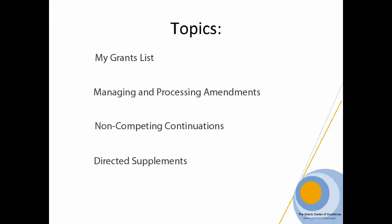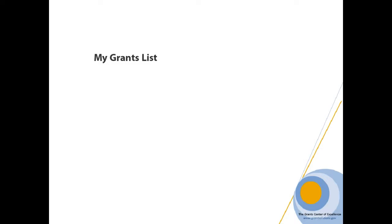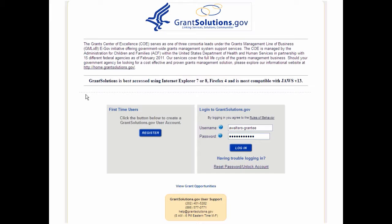Let's begin with My Grants List. My Grants List is a central point of management for all grants assigned to an organization and user. From this location, all grant details are displayed and most post-award actions are performed. To begin, log into GrantSolutions with your registered account.